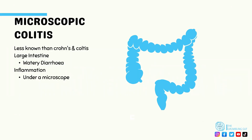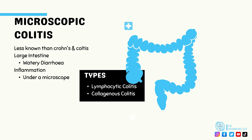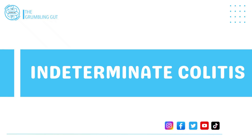Microscopic colitis is another form of IBD that is not as well known. It also affects the large intestine, but the inflammation can only be seen under a microscope when a biopsy is taken during colonoscopy. The main symptom is watery diarrhea, as the large intestine is unable to absorb water due to the microscopic inflammation. There are two types: lymphocytic colitis, where the inner lining contains many white blood cells called lymphocytes, and collagenous colitis, where there is a thicker layer of collagen on the inner lining than normal.